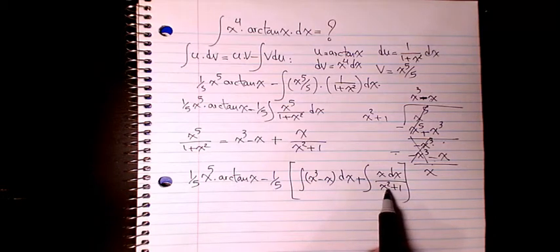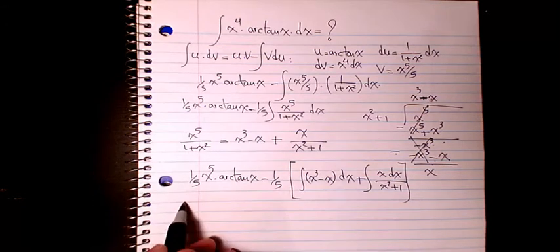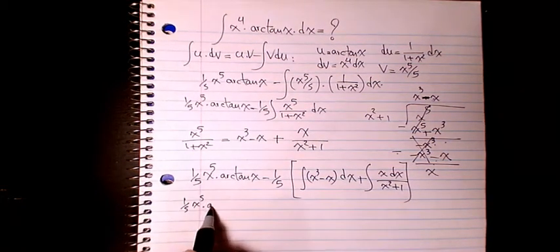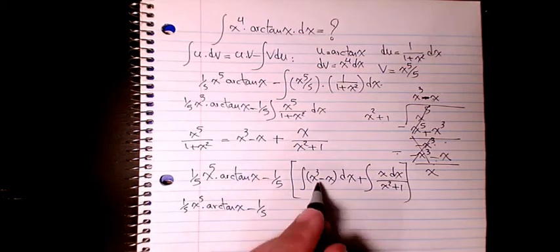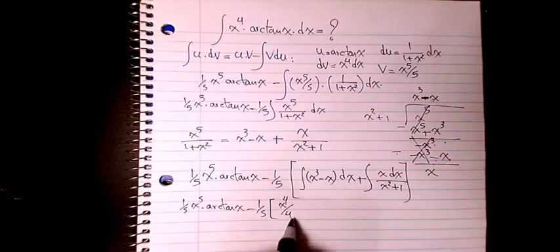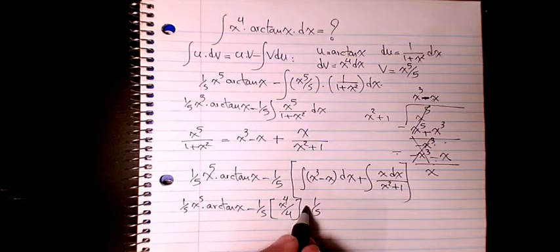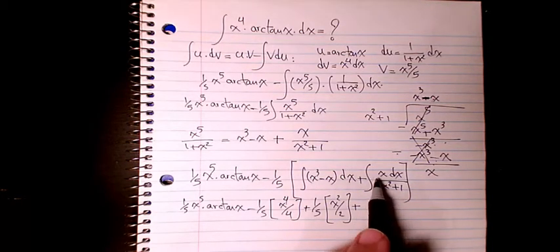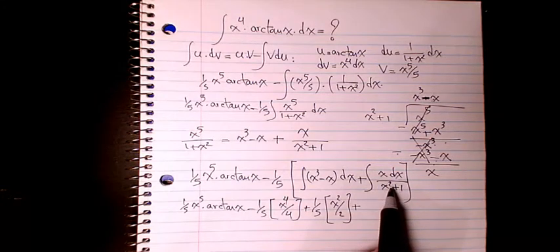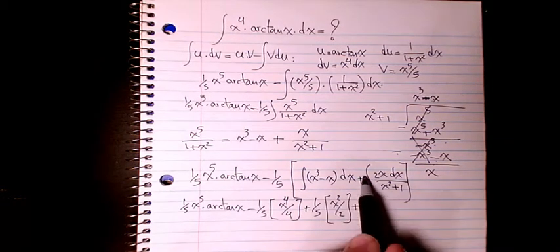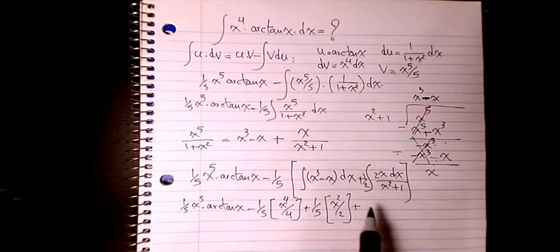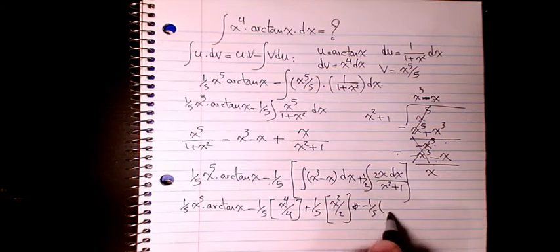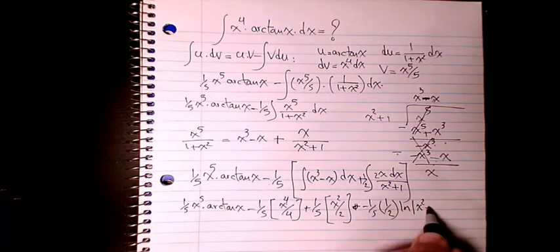So we have (1/5) x⁵ arctan(x) minus (1/5) times: the integral of x³ is x⁴/4, minus x²/2, and for the integral of x over (x² + 1), we note the derivative of (x² + 1) is 2x, so we use a factor of 1/2, giving (1/2) ln(x² + 1). Putting it together: minus (1/5) times [x⁴/4 minus x²/2 plus (1/2) ln(x² + 1)] plus C.